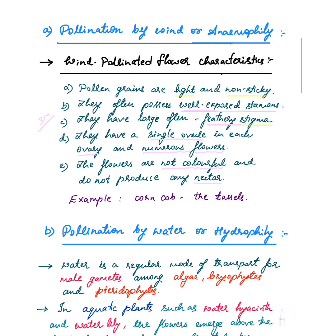The example for a wind pollinated flower is corn cob — the tassels. This is one important MCQ for your CET and NEET. They may ask you to give an example of a wind pollinated flower, or give a group of plants and ask which is wind pollinated and which is insect pollinated.